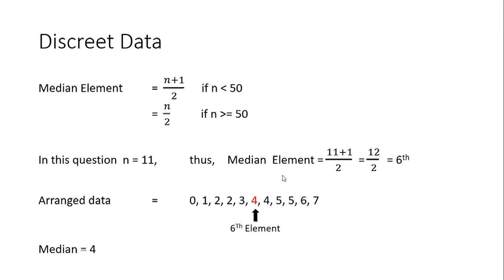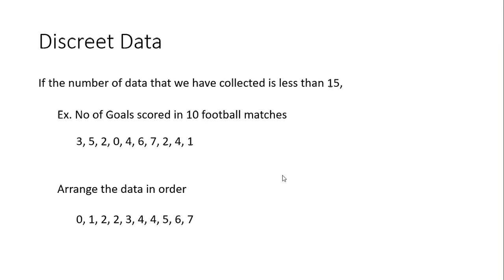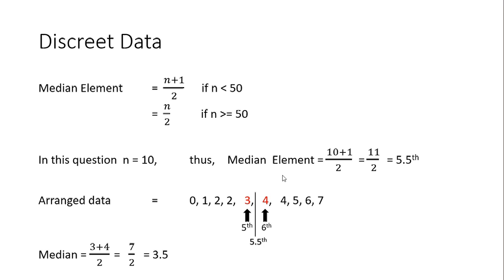Next we will see what happens if the number of data is an even number. Here again we have the number of goals scored in 10 football matches. As usual, the first thing is to arrange them in order. In this case the n value is 10, so the median element is (10 + 1) / 2 = 11 / 2 = 5.5.